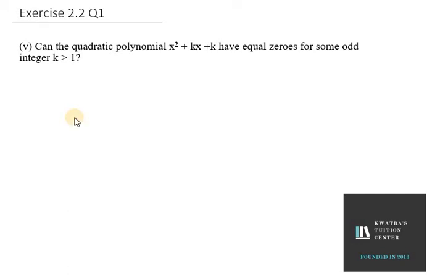Let's start with part five. It says: can the quadratic polynomial x² + kx + k have equal zeros for some odd integer k greater than 1?